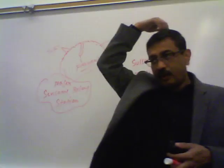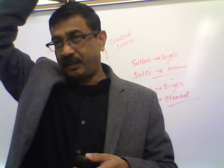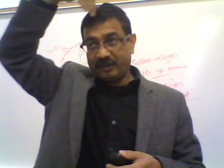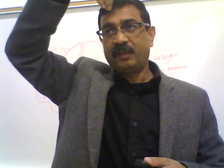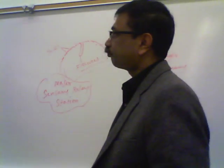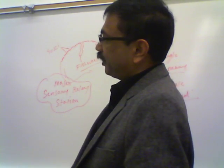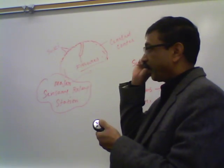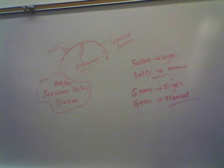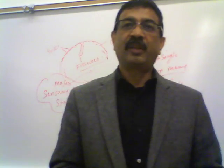The longitudinal fissure separates the two hemispheres, but you don't see it when looking at one hemisphere. The sagittal or longitudinal fissure is between the two hemispheres, and the transverse fissure separates the cerebrum and cerebellum. Each hemisphere consists of five lobes: frontal, parietal, temporal, occipital, and insular.